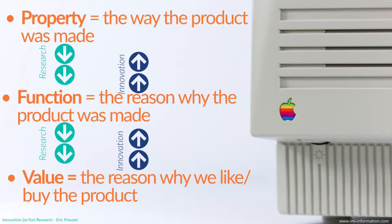Starting with a property of a molecule we discovered, we try to combine it with something to make it a function, and finally claim that this function is something we can sell. But innovation should go the opposite way — starting with a value that users and customers expect, seeing how we can offer this value by combining the right functions, and finally exploring how we can create those functions using different types of properties.